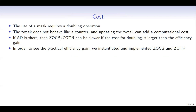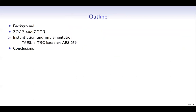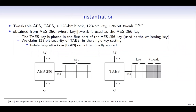In order to see the practical efficiency gain, we instantiate and implement ZO-CB and Z-OTL. For instantiation, we propose Tweakable AES, or T-AES, which is a tweakable block cipher with a 128-bit block, 128-bit keys, and 128-bit tweaks.